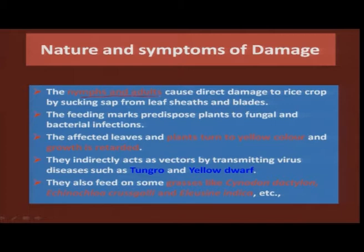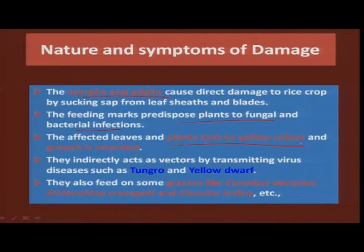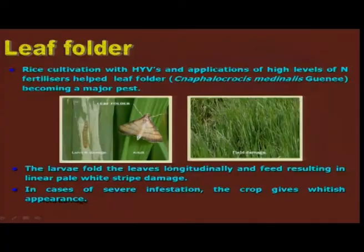Looking at the nature of damage, both nymphs and adults cause direct damage by desapping, thereby affecting growth and turning plants yellow. The spots where hoppers have sucked also provide scope for fungal and bacterial infection — this is another indirect damage. In addition to direct damage, these hoppers transmit two deadly virus diseases: one known as Tungro disease and another known as yellow dwarf. During the off season, these hoppers mainly survive on some of the grasses grown on the bunds.